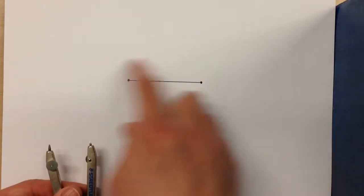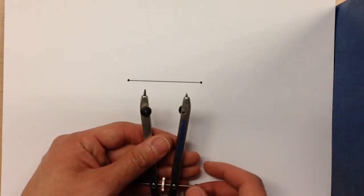Today I'm going to show you how to construct a perpendicular bisector of a line segment using your compass and straightedge.